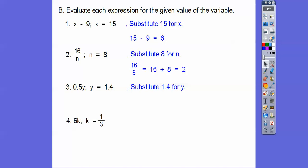Here we have 0.5y, which is 0.5 times y, and y is 1.4. If there's no variable next to it, it's understood. So 0.5y is the same as 0.5 times y, so we're going to do 0.5 times 1.4. Let's multiply 4 times 5. 4 times 5 is 20.